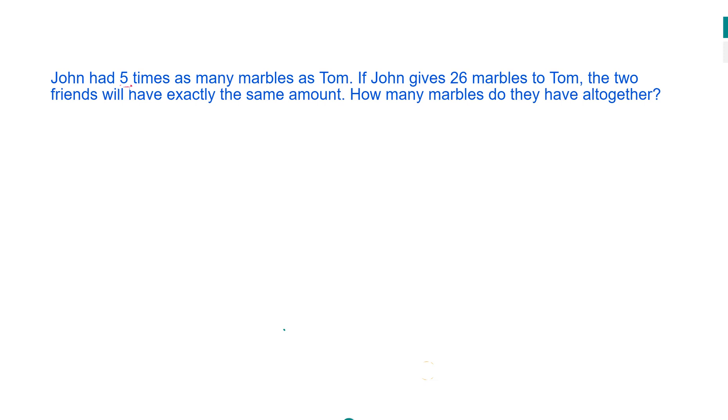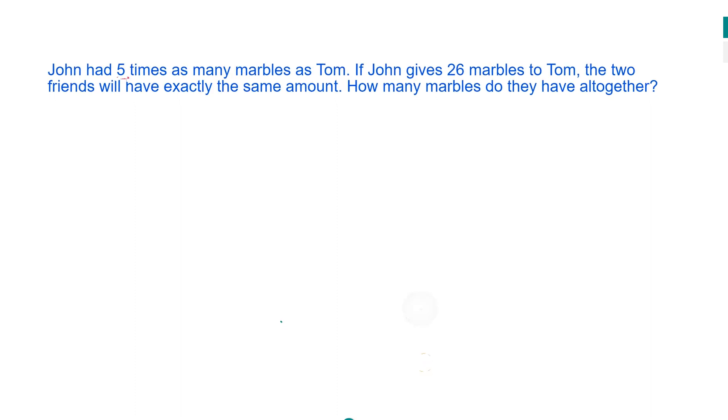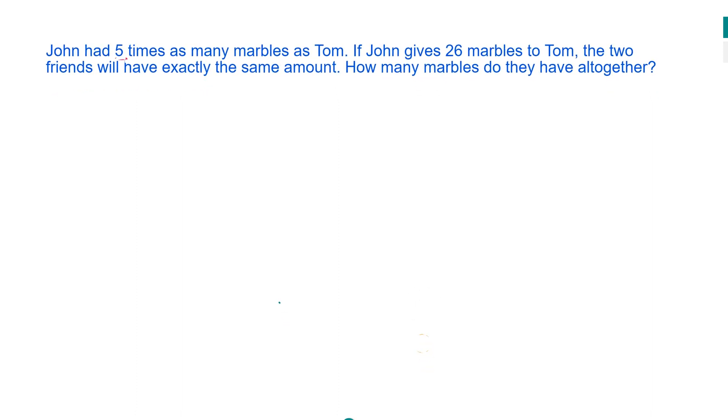We're going to be solving this word problem in a different way. We're going to be using counters this time. The problem says that John had five times as many marbles as Tom. If John gives 26 marbles to Tom, the two friends will have exactly the same amount. How many marbles do they have altogether?